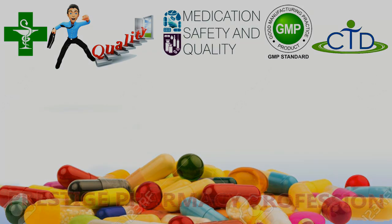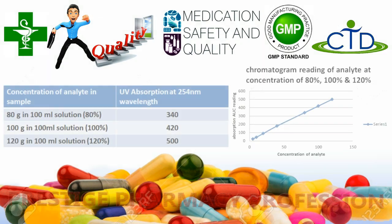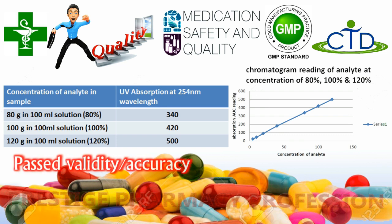We measure the accuracy of an analytical method by measuring the absorption reading of the analyte at different concentrations. The diagram on screen is an example of the linearity relationship between concentration of analyte and absorption of UV light. In the concept of linearity with respect to Beer's law, at a specific wavelength, the absorption of light for a known amount of analyte should be constant. To check accuracy, spiking is performed by adding a known amount of analyte to the sample and comparing its absorption value with the true value.